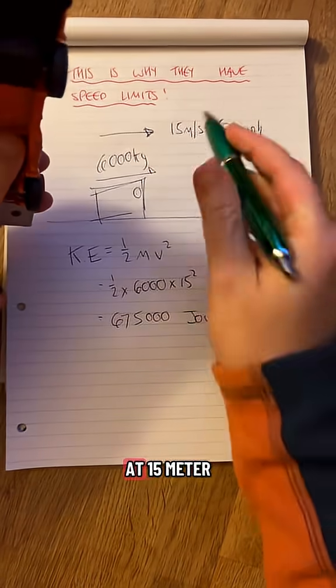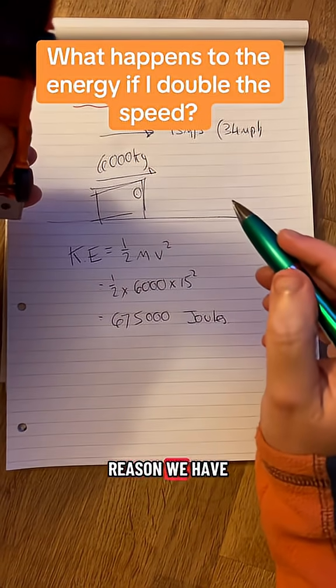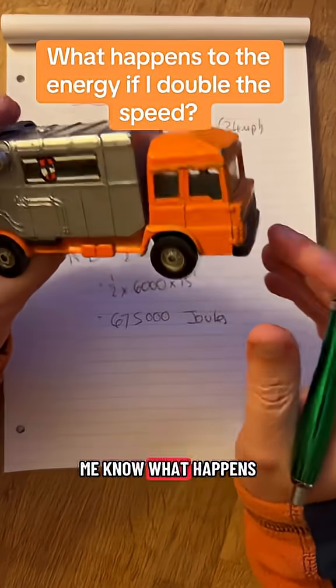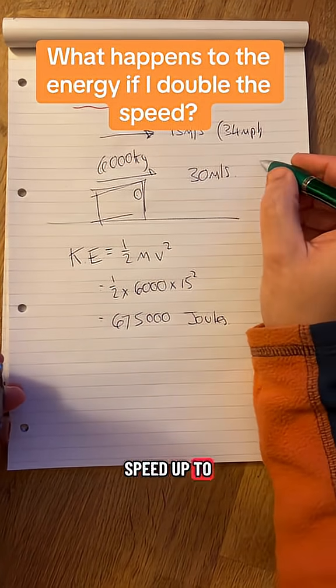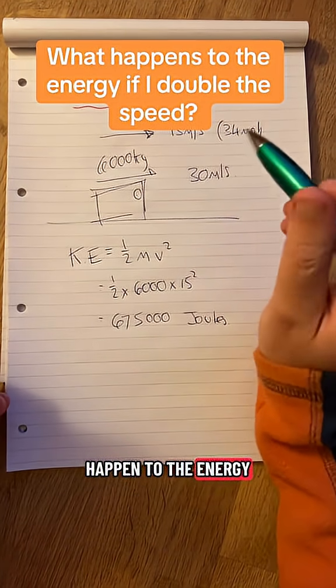6,000 kilogram truck at 15 metres per second. One of the reasons we have speed limits. Can you let me know what happens if we increase the speed to 30 metres per second? We'll double the speed up to about 65 miles per hour. What is going to happen to the energy?